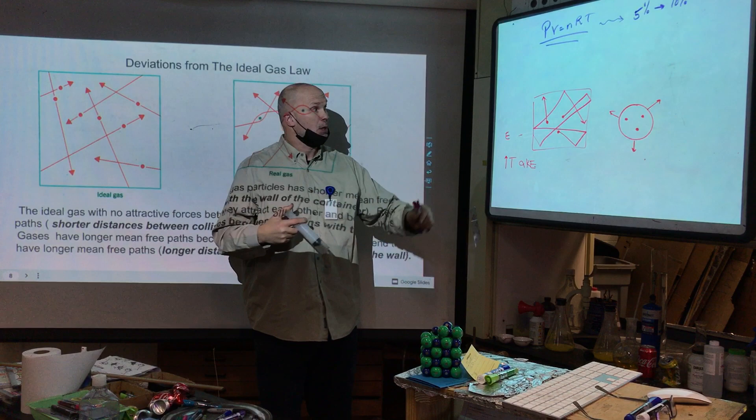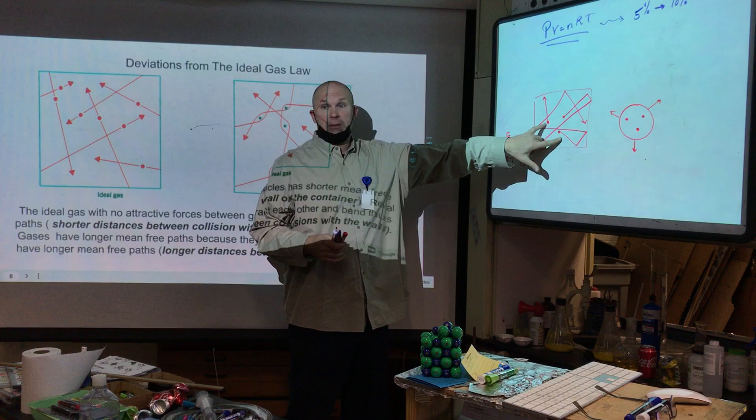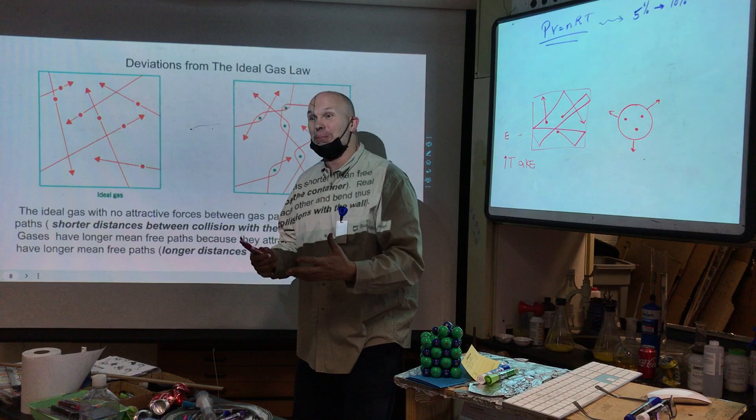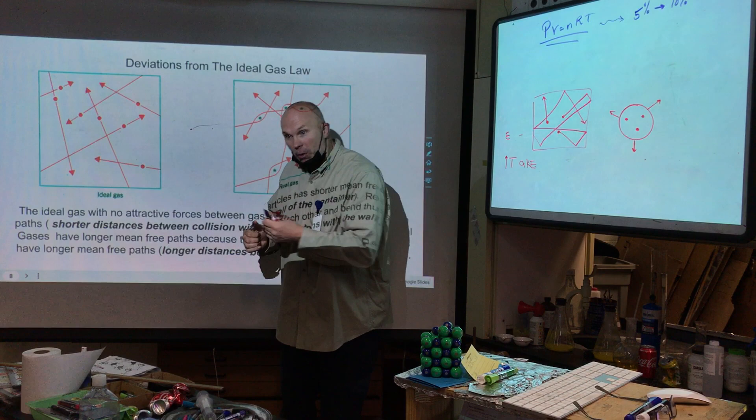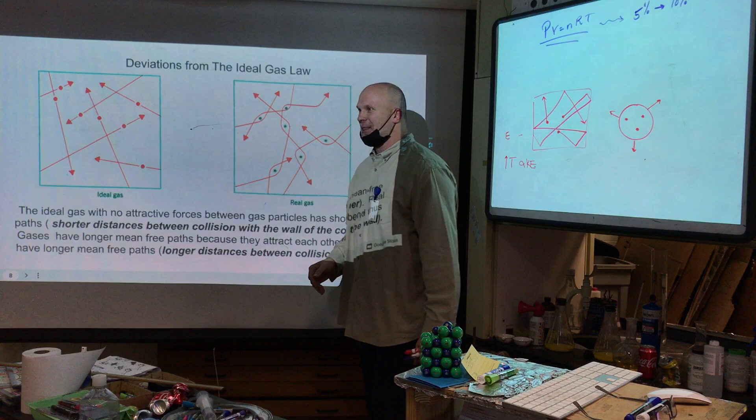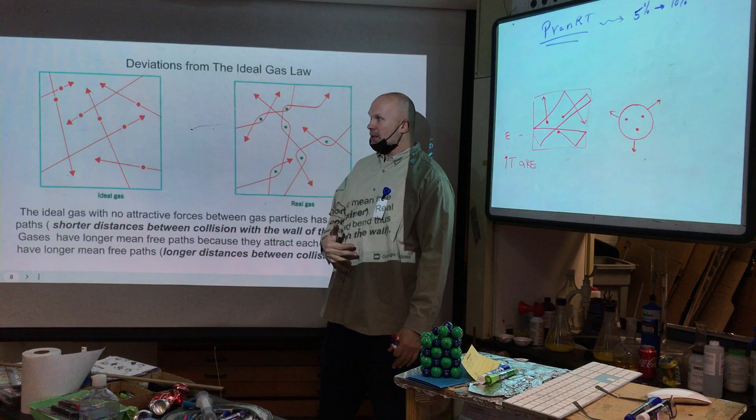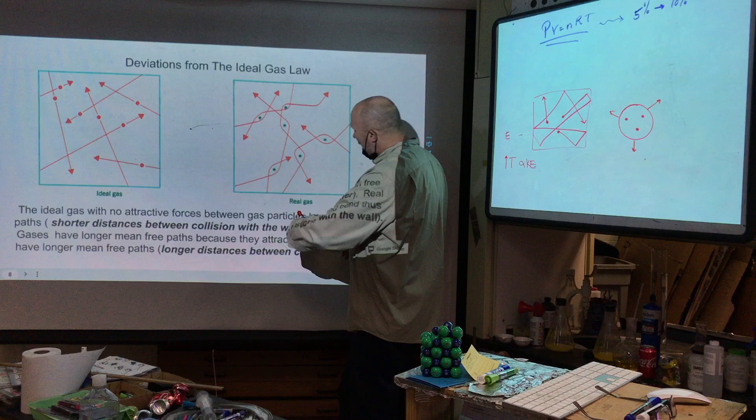Students don't walk in straight lines — they're social beings, they walk toward their friends. They take longer to get to class because they'll walk with a friend. And if they bounce into their friends, they stop and chat. But they're not going to stick together. So gases behaving like that means they're not following ideal assumptions.